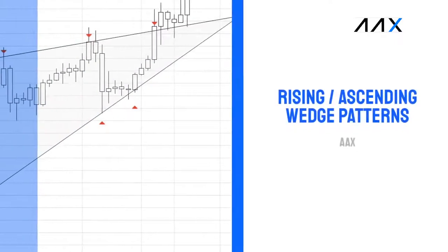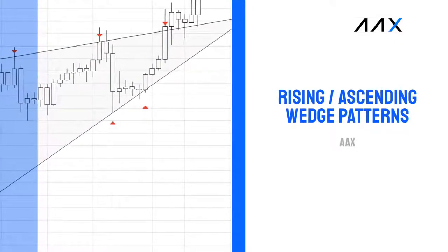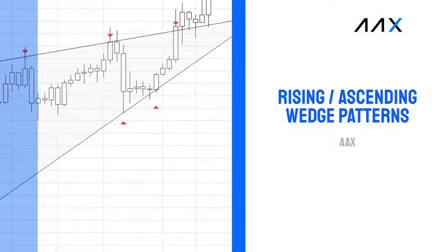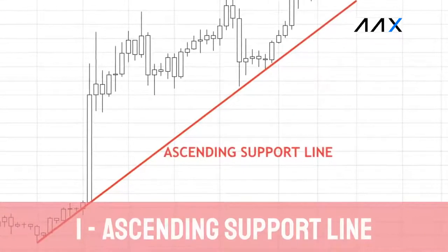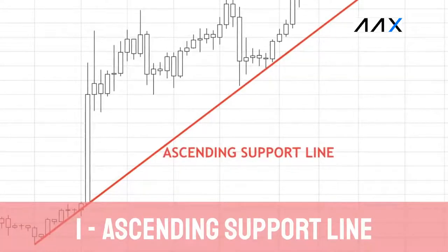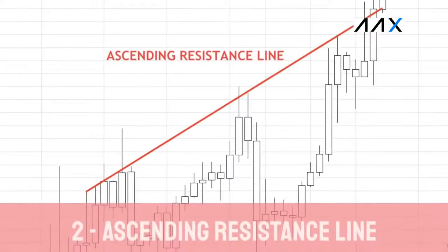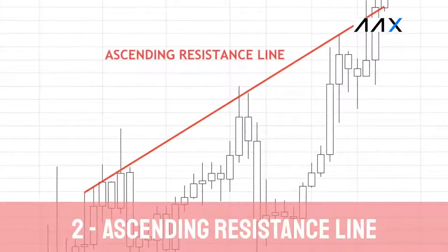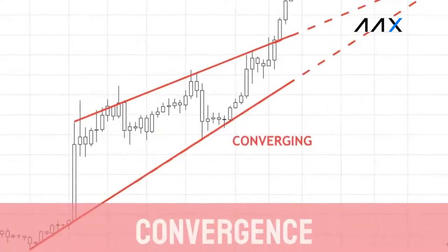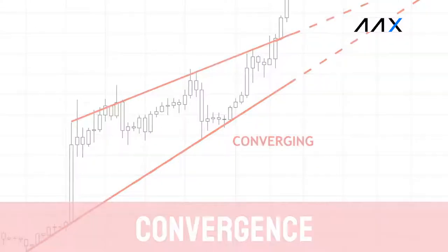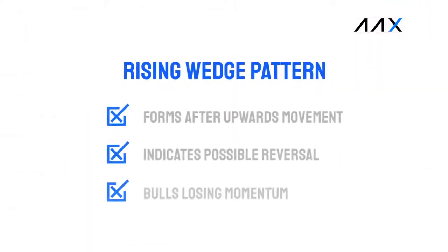The first wedge pattern we are going to be looking at is the rising wedge pattern. The rising wedge pattern consists of two things: the ascending support line and the upwards resistance line. These two lines will converge to make the rising wedge pattern. A rising wedge pattern usually forms after a period of upwards movement and is seen to usually indicate that a reversal is near, showing that the bullish momentum is losing its strength.